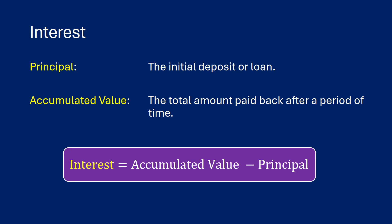Before we talk about the amount function and the accumulation function, we want to just define some simple terms. So the first one is principal. This is going to be your initial deposit or loan. You can think of this as the present value of your money at a given time.